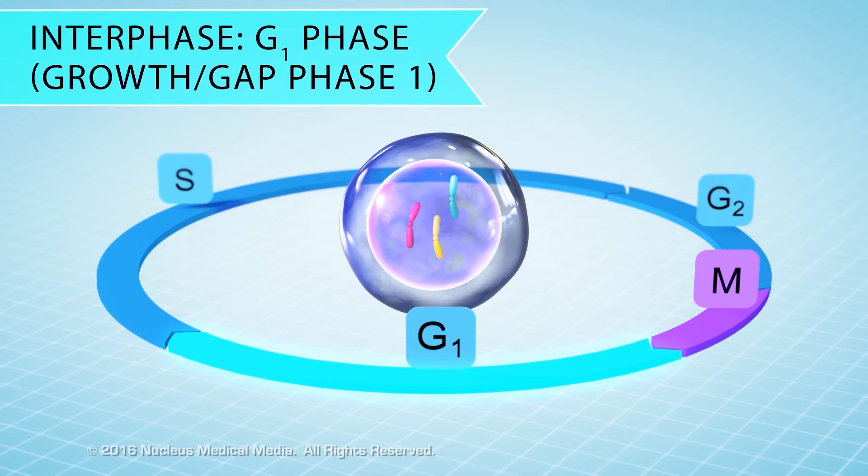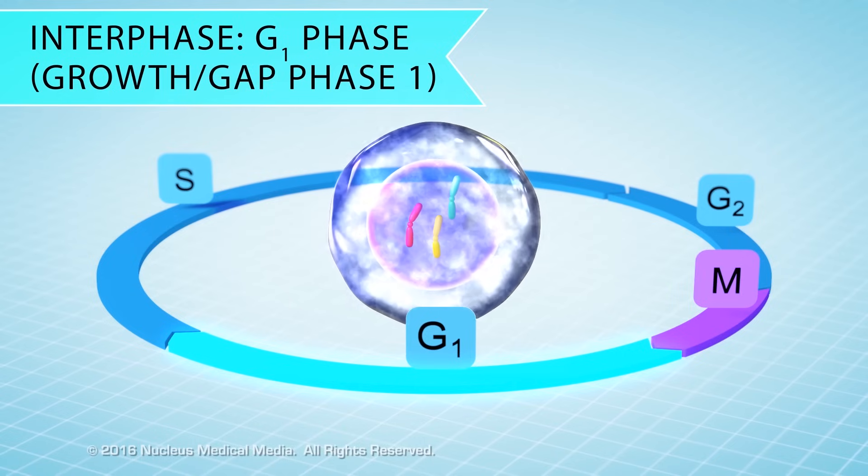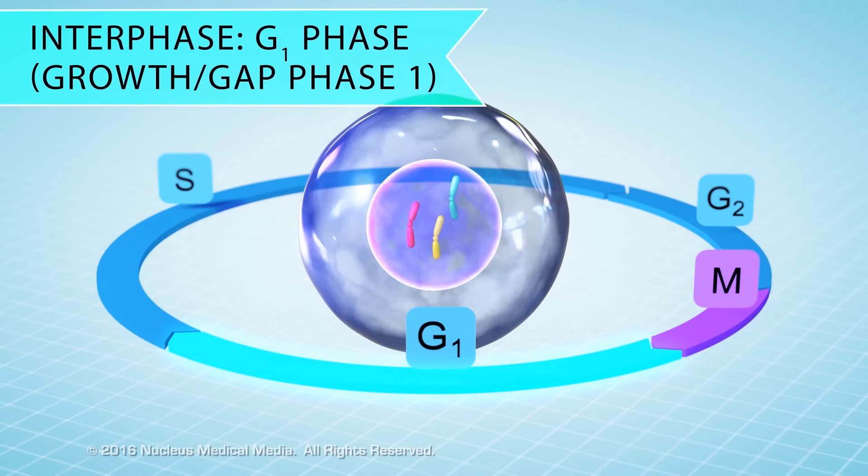G1 of interphase is sometimes called growth one or gap phase one. In G1, a cell is busy growing and carrying out whatever function it's supposed to do.